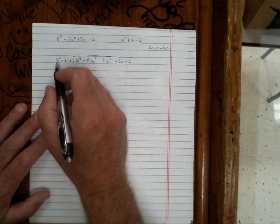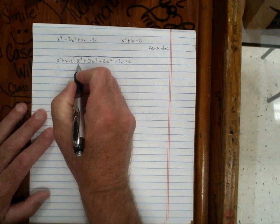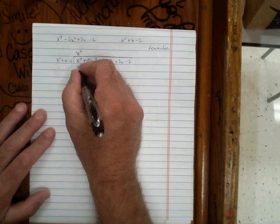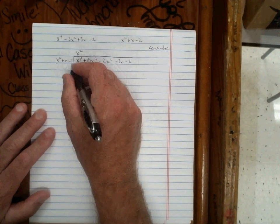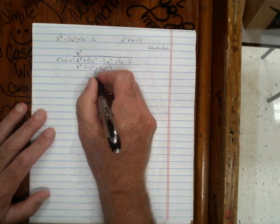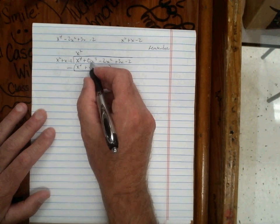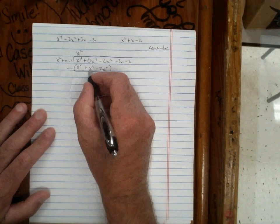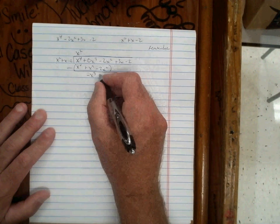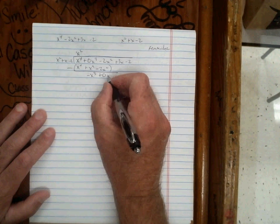We're going to key on the front term and ask ourselves: what times x squared makes x to the fourth? That's going to be x squared. Multiply that times everything on the outside and get x to the fourth plus x cubed minus 2x squared. When we subtract, the x to the fourth cancels, and 0x cubed minus x cubed makes negative x cubed. Negative 2x squared minus negative 2x squared makes 0x squared.